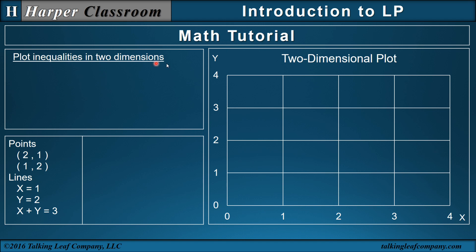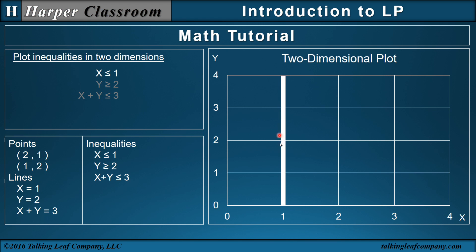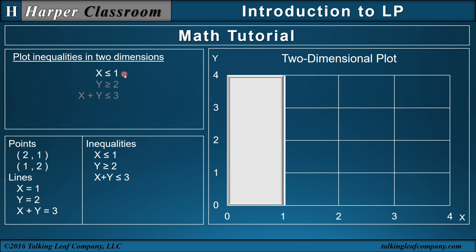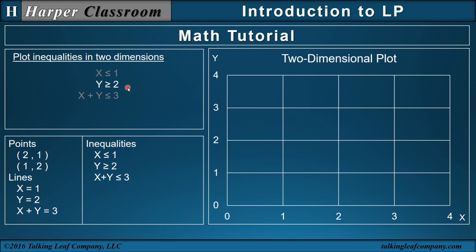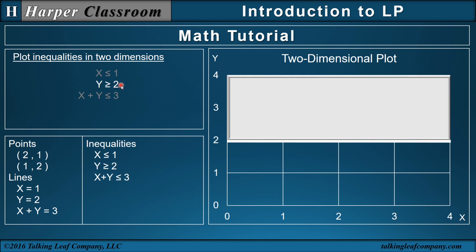I can also plot inequalities in two dimensions. Consider these three inequalities. First, x is less than or equal to 1. I know x equals 1 is this line right here, but all the points to the left of that will have an x-value less than or equal to 1. So this inequality plots as a half space, where the boundary of the half space is the equation x equals 1. What about the inequality y is greater than or equal to 2? I know y equals 2 is this line right here, which is the boundary of the half space, but everything above that, y will be greater than 2. So that inequality plots as a half space where the boundary is the equation.